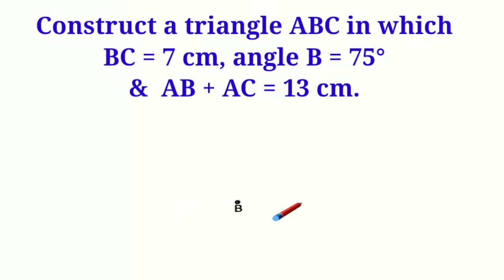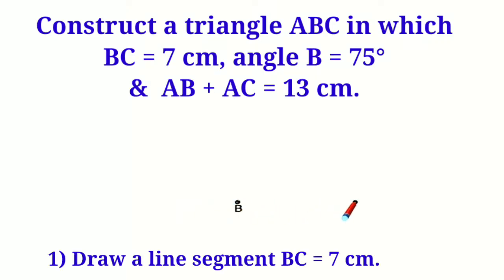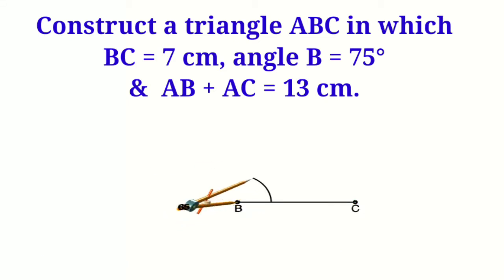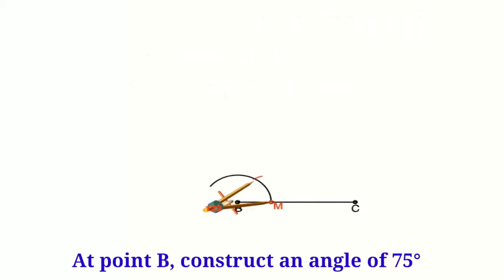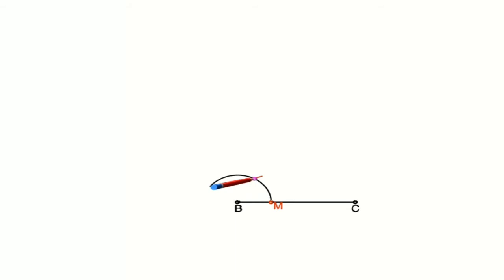These are the given measurements. First, we need to draw a line segment BC, the given base BC. Then it is given that angle B equals 75 degrees, so now we are drawing an angle of 75 degrees.